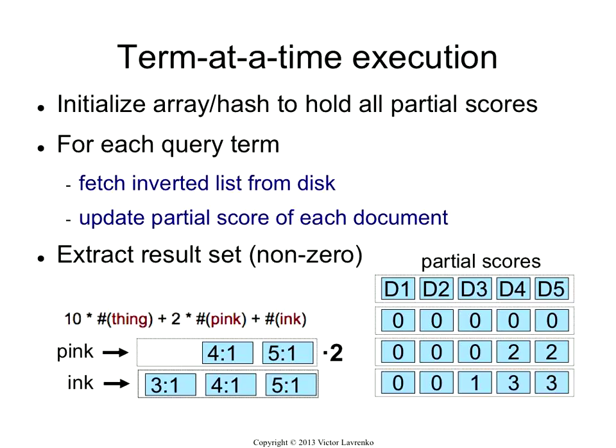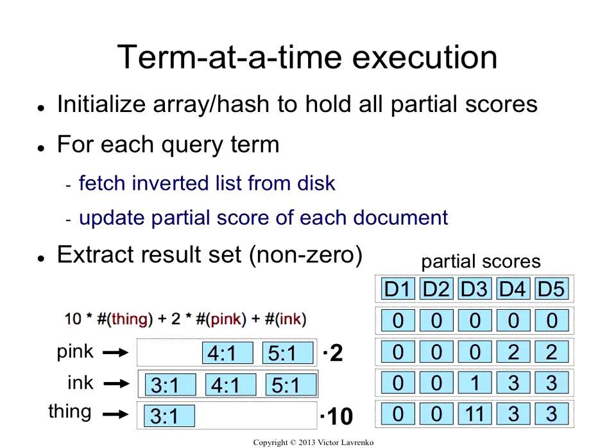Then you take the next word, ink. Ink has a weight of 1 and it occurs in documents 3, 4, and 5. I iterate over that list: document 3, add 1 times the weight — the weight is 1, so just add 1 to the score, making it 1. Document 4, add 1 to whatever it was — it used to be 2, now it's 3. Document 5, add 1 to 2, you get a 3. Then think occurs only in document 3, so I increment its score not by 1 but by 10, because that's the weight of the word in the query.